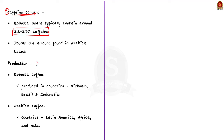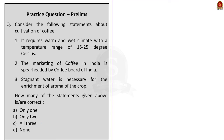Robusta is primarily produced in countries like Vietnam, Brazil and Indonesia, which have suitable low-altitude tropical climates, whereas Arabica is commonly cultivated in Latin America, Africa and Asia, known for their high-altitude and suitable climates. Coming back to the question: statement one — coffee requires warm and wet climate with a temperature range of 15 to 25°C — is correct. Statement two — marketing of coffee in India is spearheaded by the Coffee Board of India — is wrong, as marketing was privatized after the LPG reforms of 1991. Statement three — stagnant water is necessary for aroma enrichment — is also wrong as stagnation damages the crop. So the correct option is A.